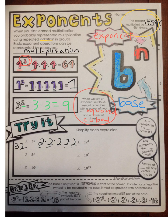12 to the first power: 12 is the base, but we are only going to write it once, so 12 to the first power is 12. 5 to the third power: 5 times 5 is 25, and 25 times 5 is 125.